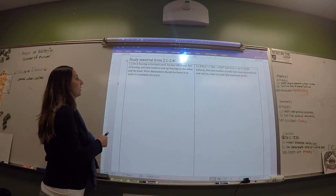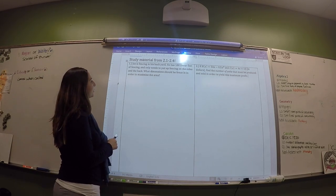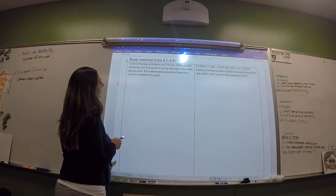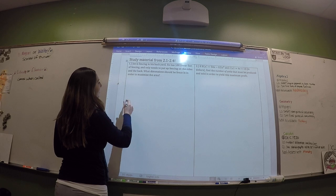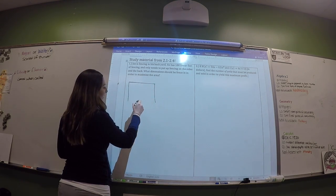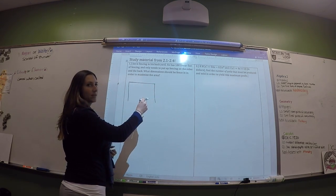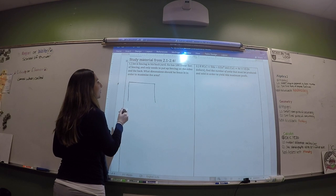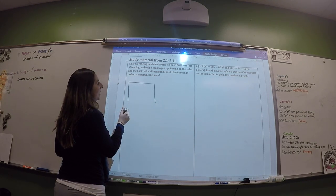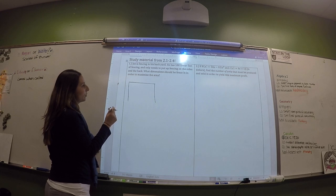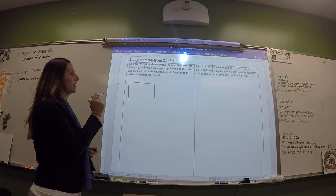Joe is fencing in his backyard. He has 100 linear feet of fencing, and he only needs to put a fence around the sides and back, because the house is here, so he doesn't have to fence in that part. The question asks: what dimensions should he fence in order to maximize the area?